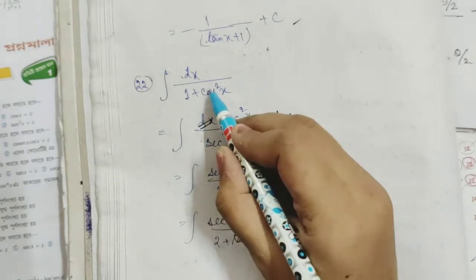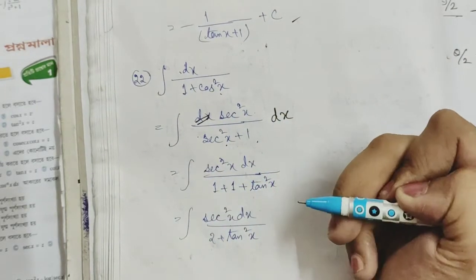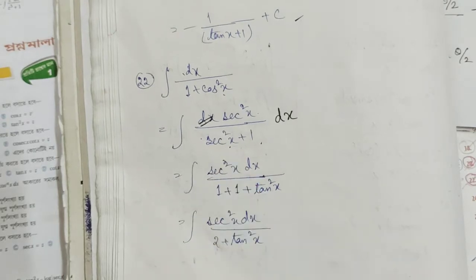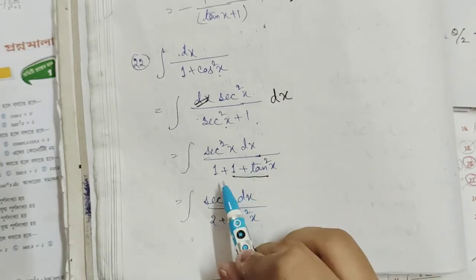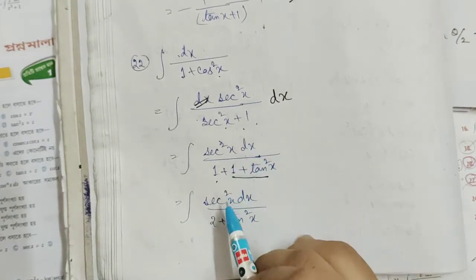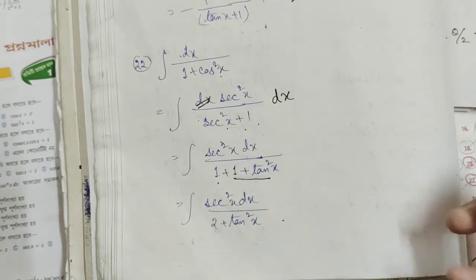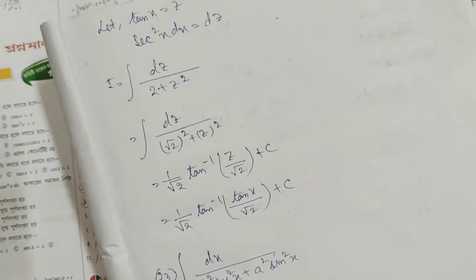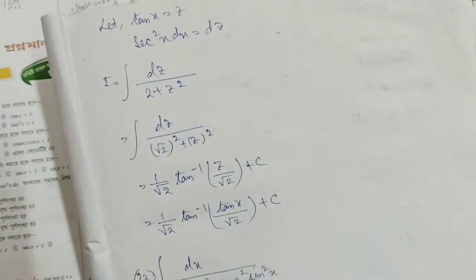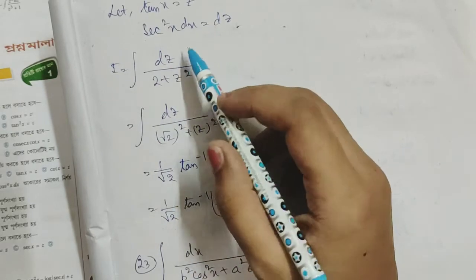sin squared x plus cos squared x divided by cos squared x equals 1. This gives us sec squared x, which is 1 plus tan squared x. So the expression becomes 2 plus tan squared x, with sec squared x dx. We call tan x equal to z, and the differential sec squared x dx equals dz, giving the form 2 plus z squared.